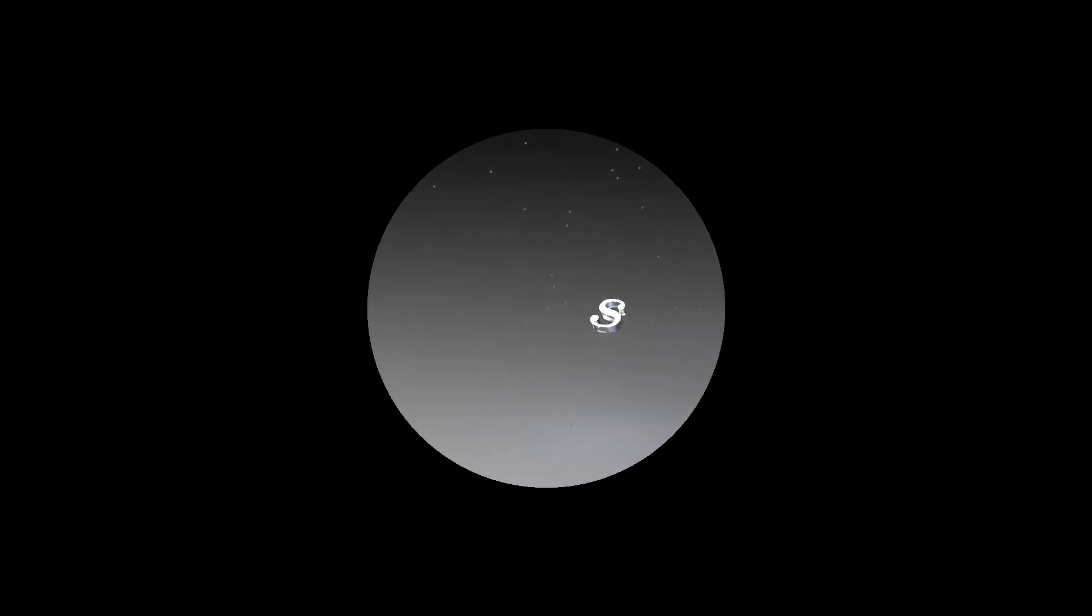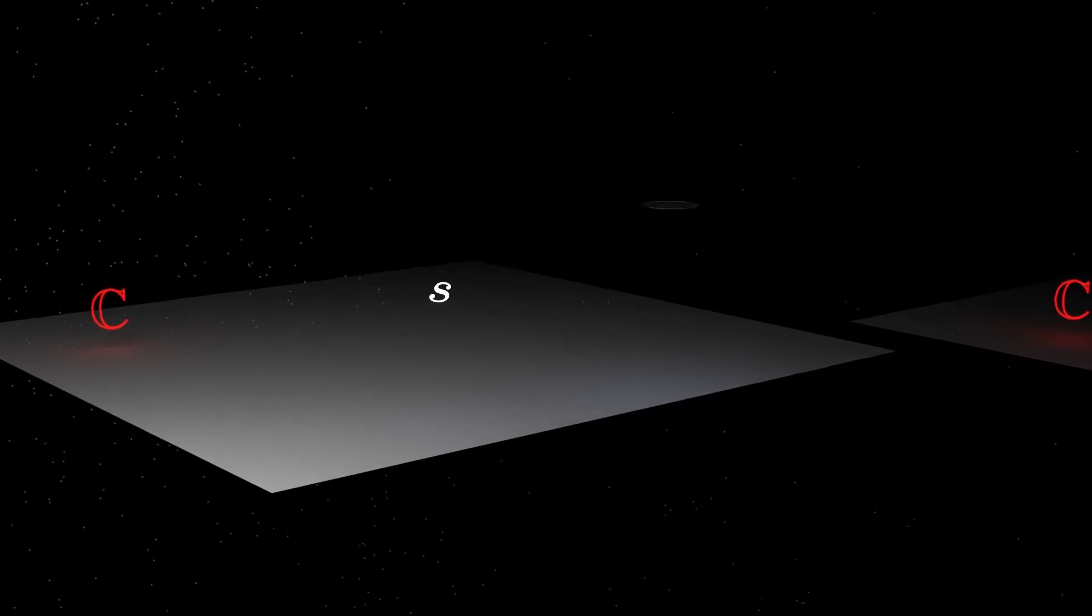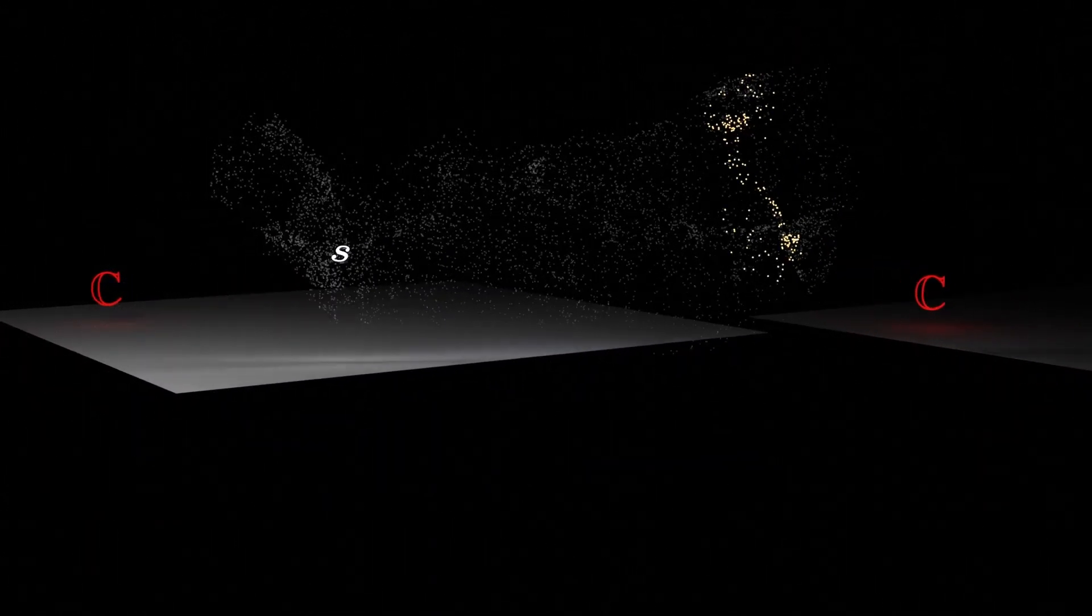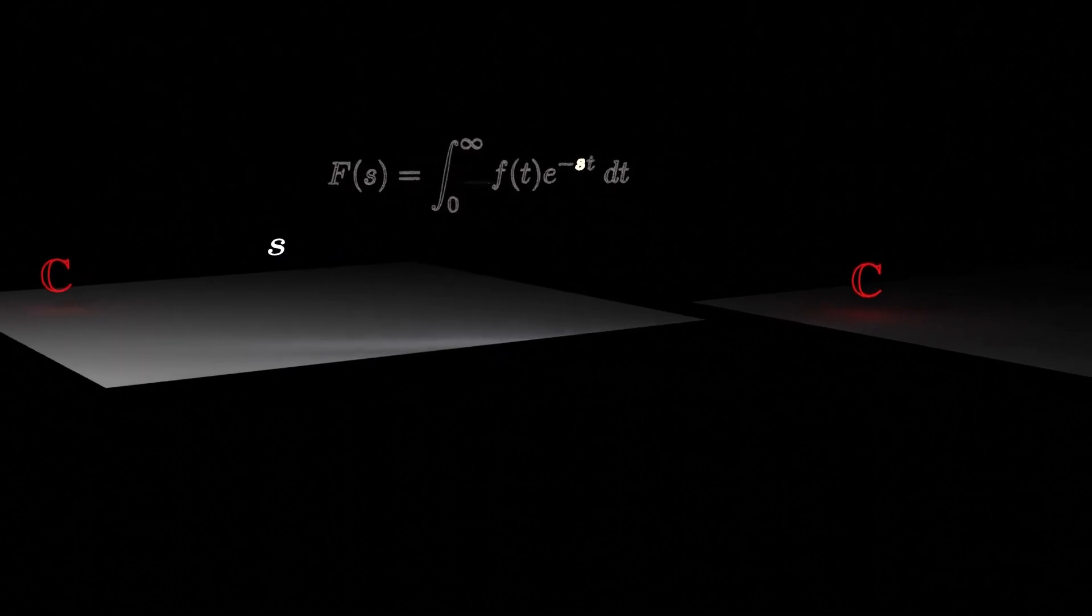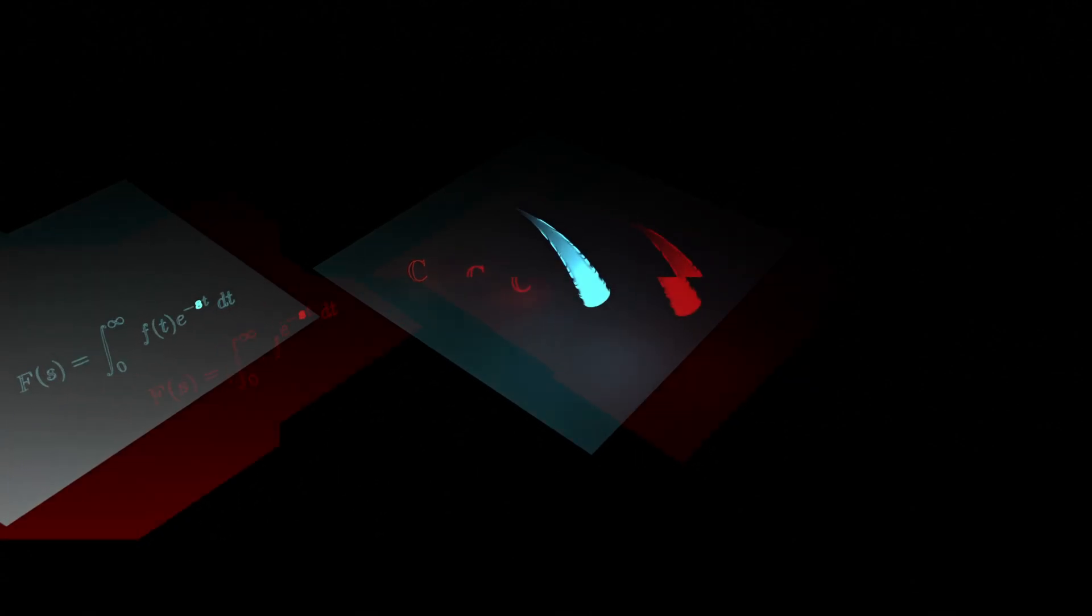And so for a complex number, the full transform with both the real and imaginary parts in the integral is somehow encoding both data about the similarity of the function to certain exponential decays and also somehow the frequency profile of the function. But it's also muddled.